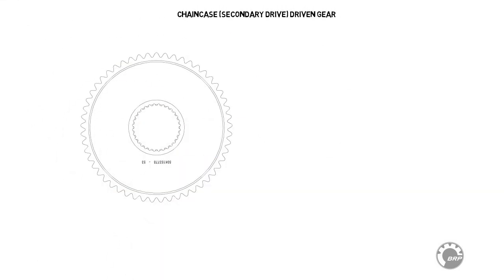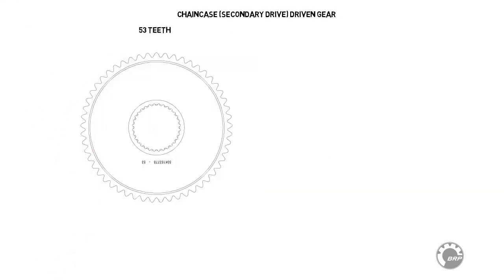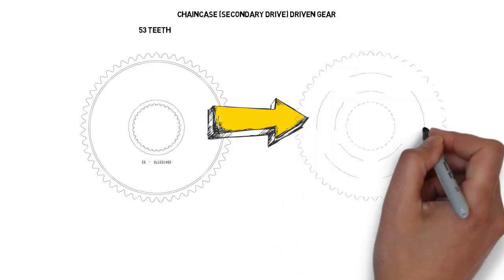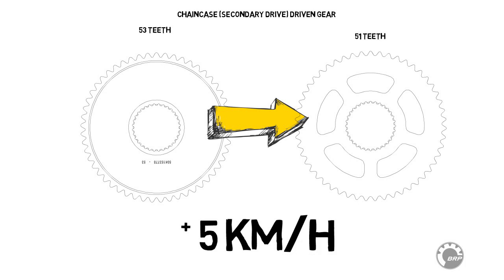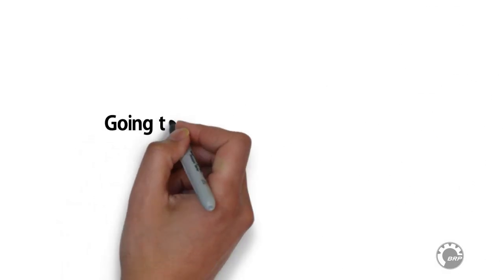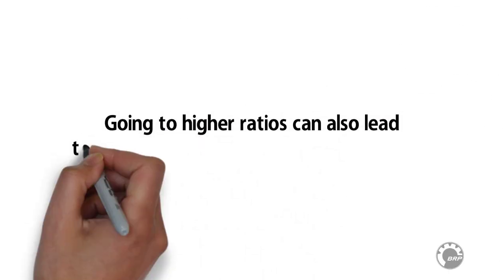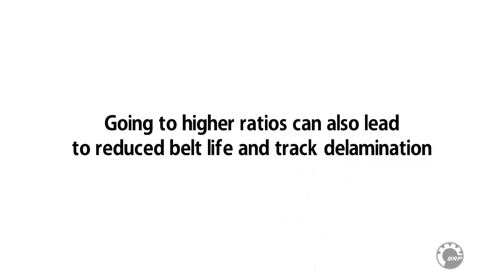Merely installing a driven gear with two fewer teeth will increase the snowmobile's top speed by approximately 5 kmph. It is for this reason that only experienced technicians who fully understand the potential consequences should perform gear ratio modifications. Going to higher ratios can also lead to reduced belt life and track delamination.